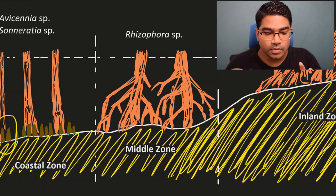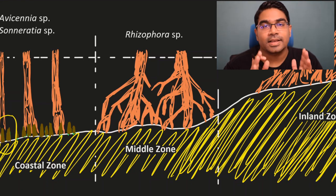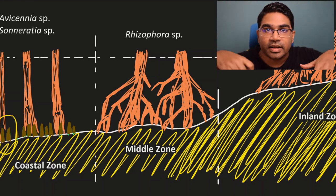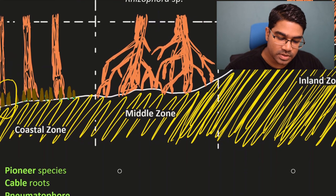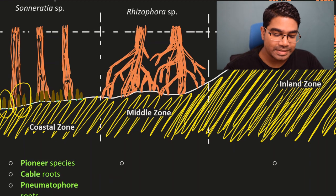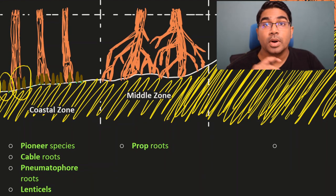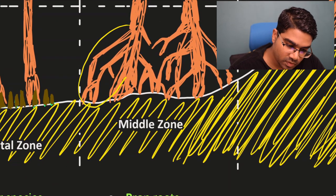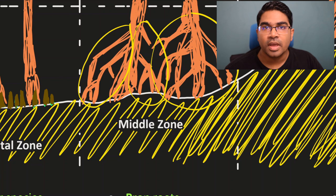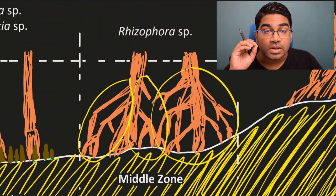Over time, Rhizophora will take the place of Avicennia and Sonneratia — Rhizophora acts as the successor species. Rhizophora also has special adaptations to survive in the now harder ground. It has what we call prop roots, which are propped out from the bark, helping to hold it in place and keep it firm especially during strong winds and strong waves.